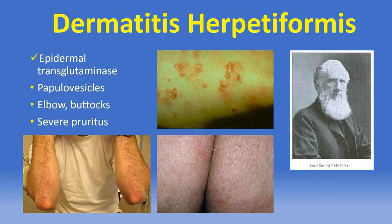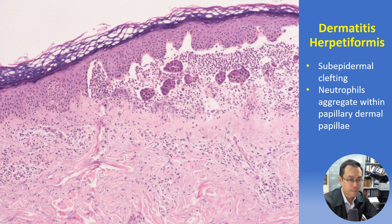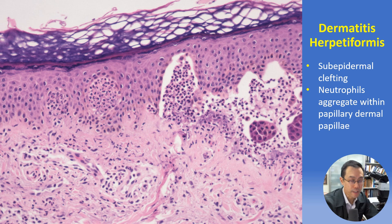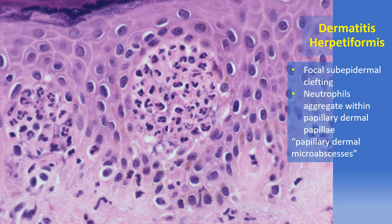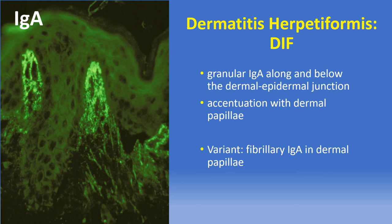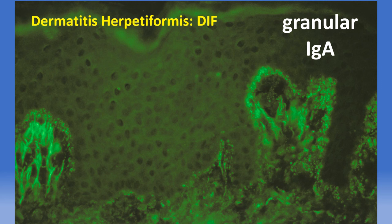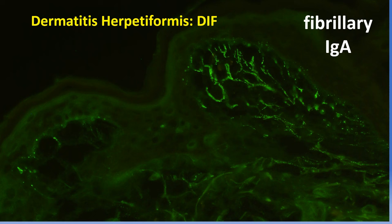Dermatitis herpetiformis is mediated by autoantibodies directed against epidermal transglutaminase and is characterized by papulovesicles with predilection for the elbows and buttocks and severe itch. Similar to linear IgA bullous dermatosis, biopsies show subepidermal clefting with neutrophils aggregating within and filling dermal papillae — a distinctive finding characterized as papillary dermal micro-abscesses or papillary micro-abscesses. DIF testing shows a pathognomonic staining pattern with granular deposition of IgA along and below the dermal-epidermal junction, accentuated within dermal papillae. Less commonly a fibrillary pattern of IgA will be present within the dermal papillae.